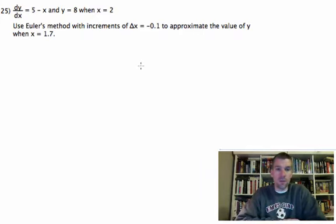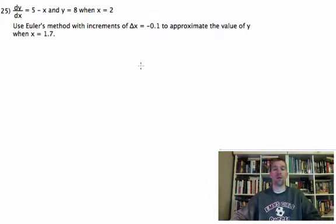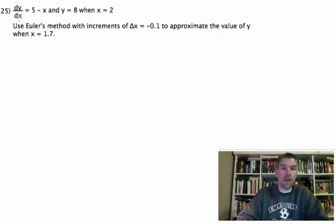We're going to use Euler's method with increments of delta x equal to negative 0.1 and approximate the value of y when x is 1.7. So dy/dx is equal to 5 minus x, and our starting initial value is going to be x is 2, y is 8.